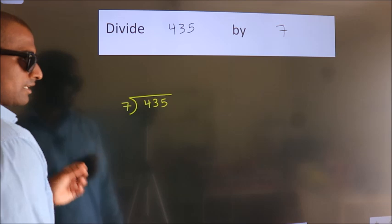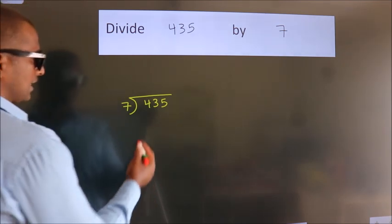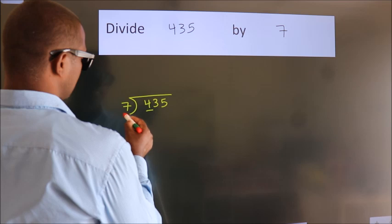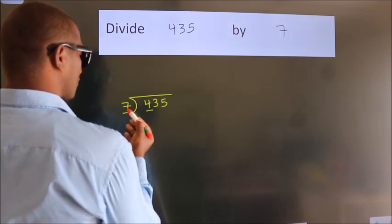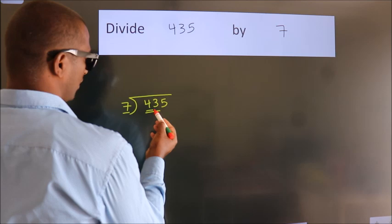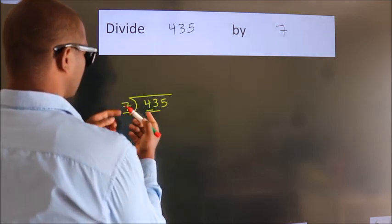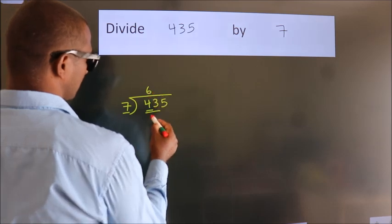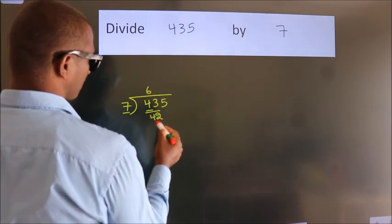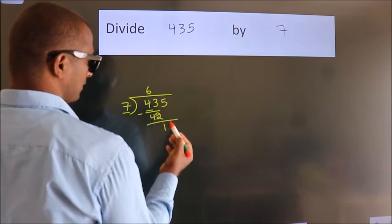This is your step 1. Next, here we have 4, here 7. 4 is smaller than 7, so we should take two numbers, 43. A number close to 43 in the 7 table is 7 sixes, 42. Now we should subtract. We get 1.